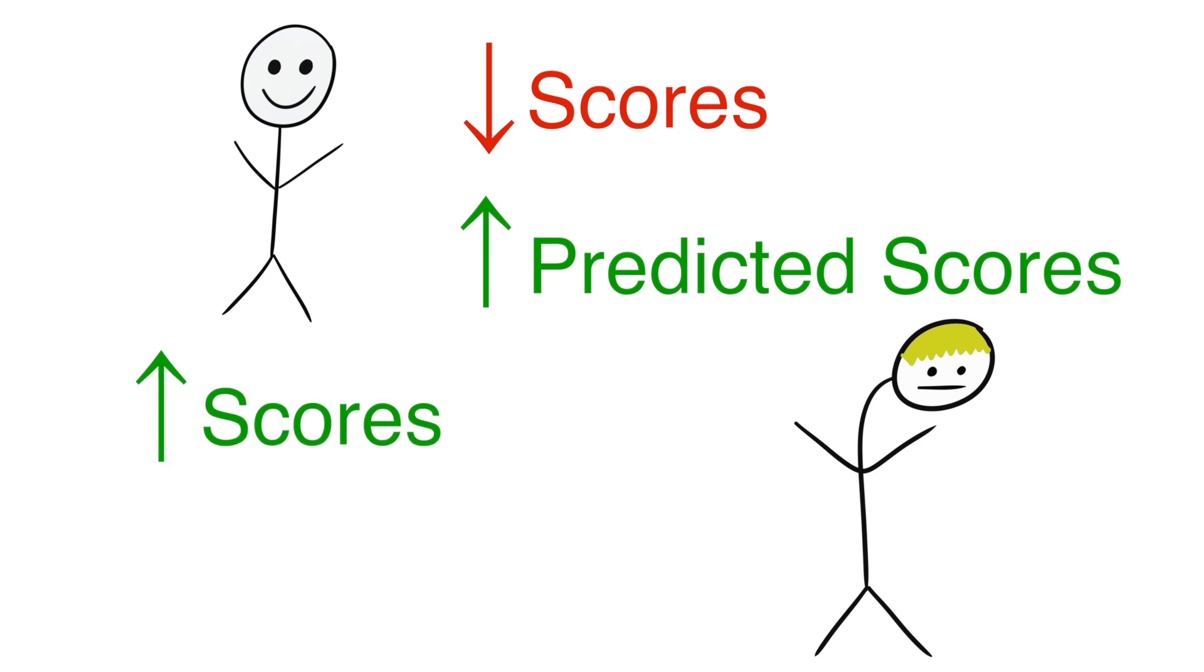Paradoxically, students who knew more about the subjects they were being tested on predicted they would do worse than they actually did. So what's going on here?